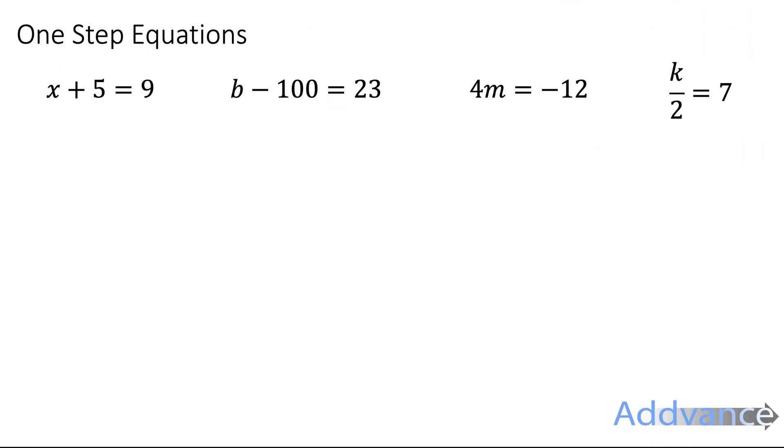So x plus 5 equals 9 and you're going to do the opposite of plus 5 and you're going to subtract 5. You get x equals 9 minus 5. x is equal to 4.